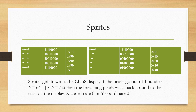Let me explain how the drawing procedure works. Sprites get drawn to the Chip 8 display, and if the pixels go out of bounds — x is above or equal to 64, or y is above or equal to 32 — the breaching pixels wrap back around to the start of the display from x-coordinate 0 or y-coordinate 0. So if half of a sprite breaches the bounds, that half will be drawn at the start of the display while the other half remains at the end.